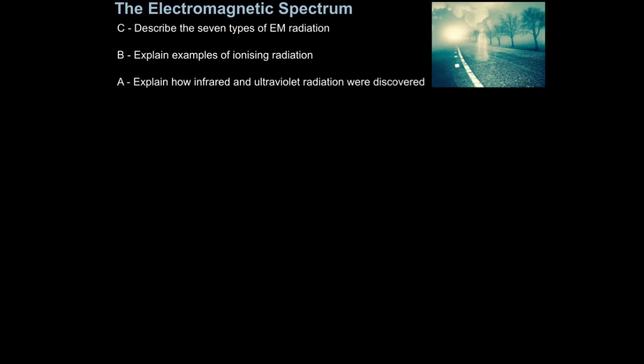In this lesson, we're going to look at an overview of the electromagnetic spectrum. We're going to describe the seven types of electromagnetic radiation, or EM for short, then explain examples of ionizing radiation, and then explain how infrared and ultraviolet radiation were discovered.